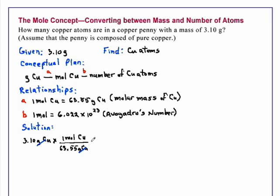And in our second step, we will convert moles of copper to copper atoms. We have 6.022 times 10 to the 23rd copper atoms per mole of copper.